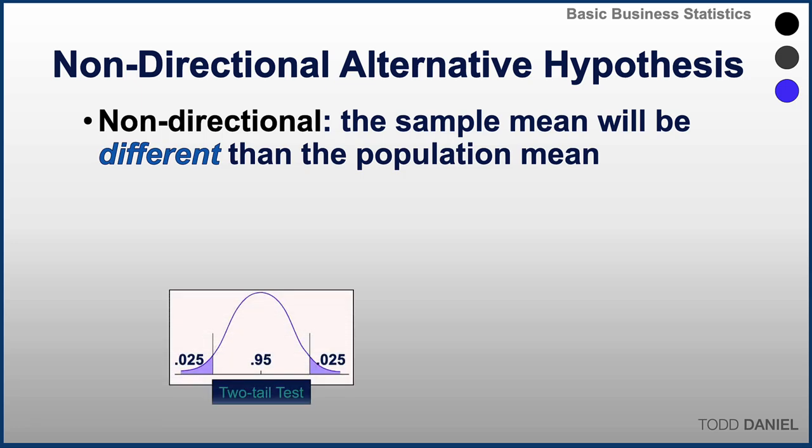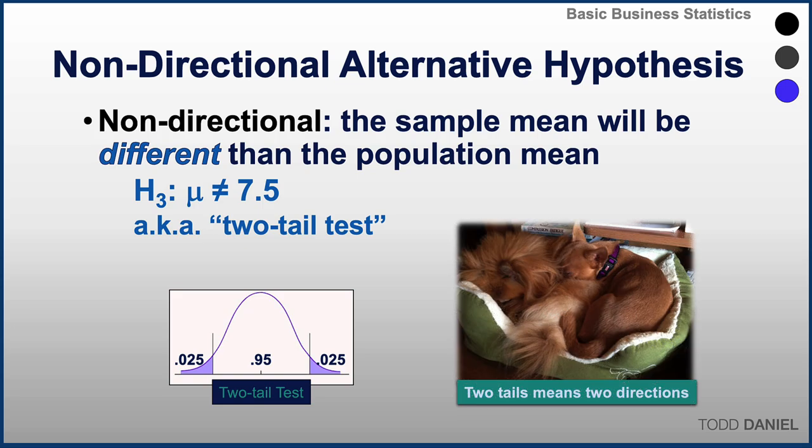Changes in either the upper level or the lower level are both interesting. So we might write this alternative hypothesis as H sub 3 colon mu does not equal 7.5. We are interested in changes that are different, not higher or lower necessarily. Changes in either direction will be important for us to report. A two-tailed test means that the changes can go in either direction.